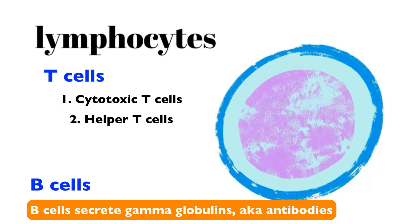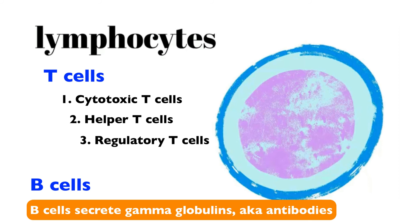There are also helper T cells, which do not kill but are there to mobilize our immune system. We also have regulatory T cells, which suppress our immune system so it doesn't become overactive. There are a number of diseases and pathologies that result from autoimmune disorders where our immune system attacks our own healthy body cells, so regulatory T cells are there to suppress excessive immune activity.